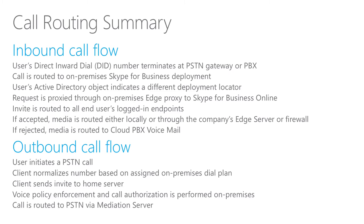From Office 365, all signed-in endpoints for that user receive the signal that an incoming call is arriving and they start ringing. If the user accepts the call, a media channel is established. If the user is internal to your network, media is sent directly from the endpoint to the mediation server. If the user is external, media travels via the edge server. If the user doesn't accept or rejects the call, media is routed to Cloud PBX voicemail. For all users leveraging Cloud PBX, voicemail is provided via Azure voicemail in Office 365.